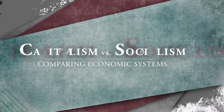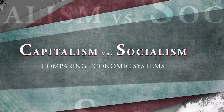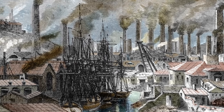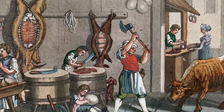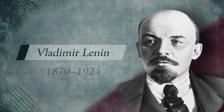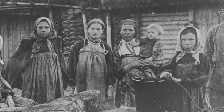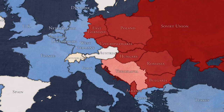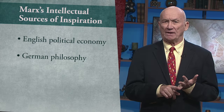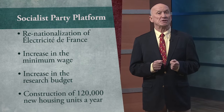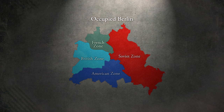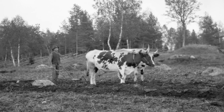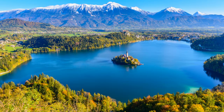In this great course on comparative economics, I'll be your guide from the 18th century British Industrial Revolution and early American capitalism through the Bolshevik experiment in Russia and the economic collapse of the Soviet Union and Eastern Europe. We'll examine the social fractures that set Britain, France, and Germany on separate paths, as well as the mixed economic models of Sweden and Slovenia.